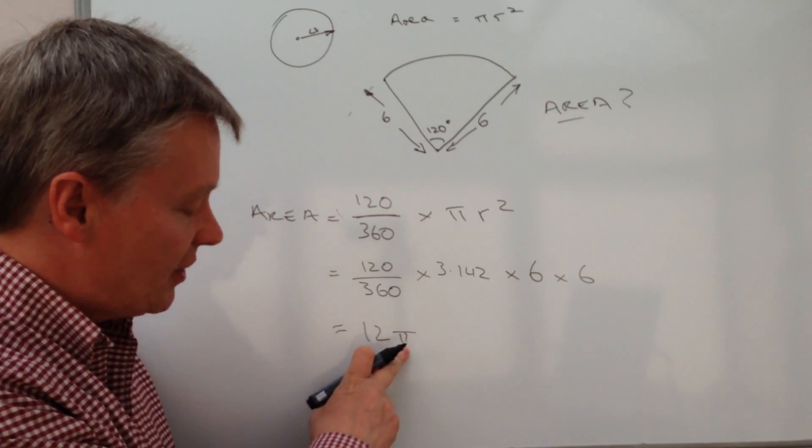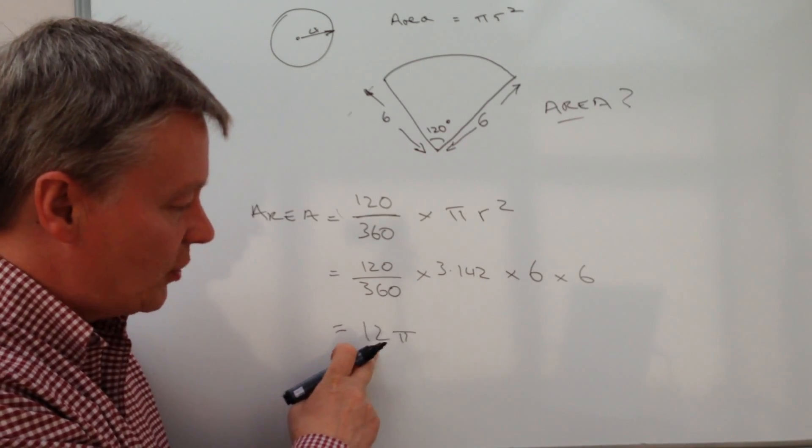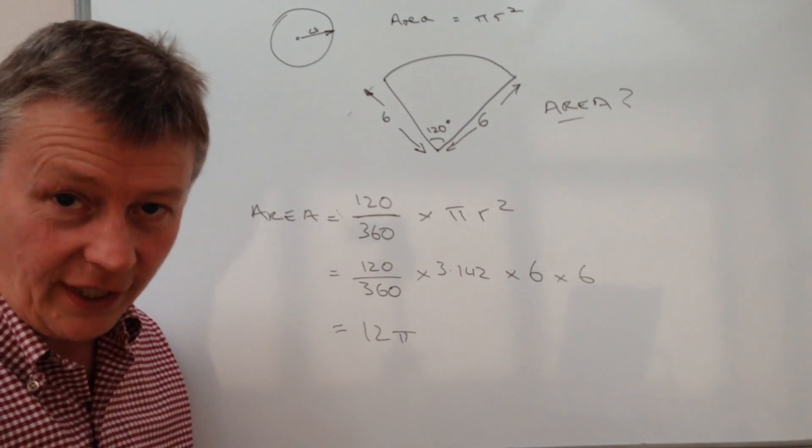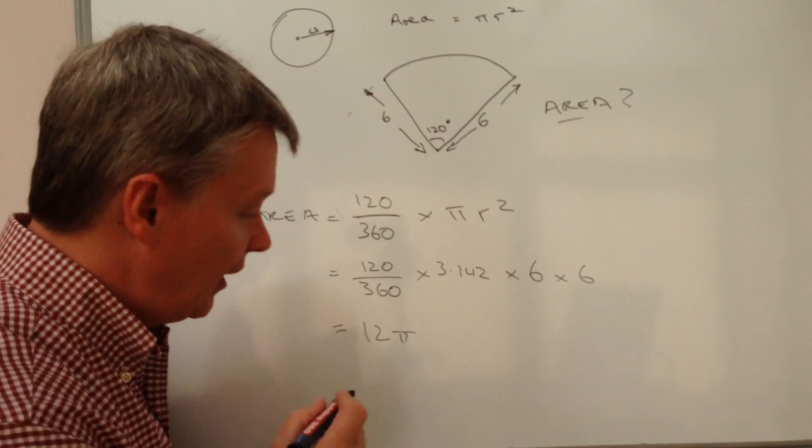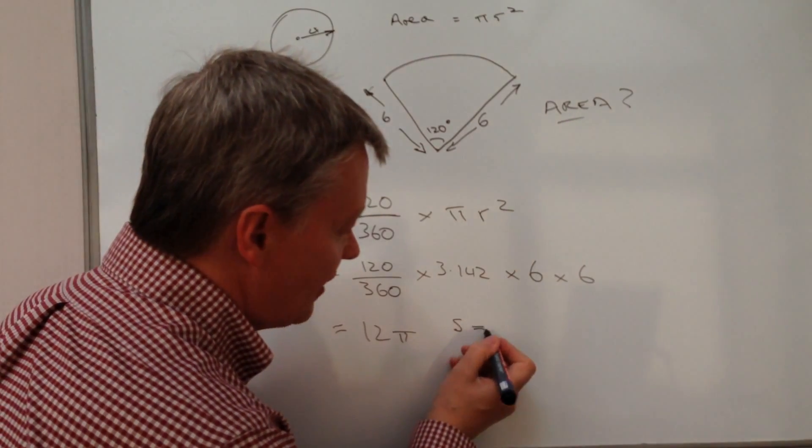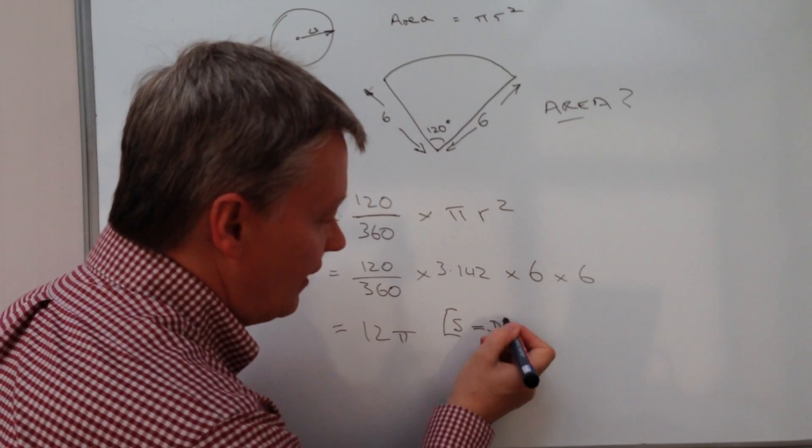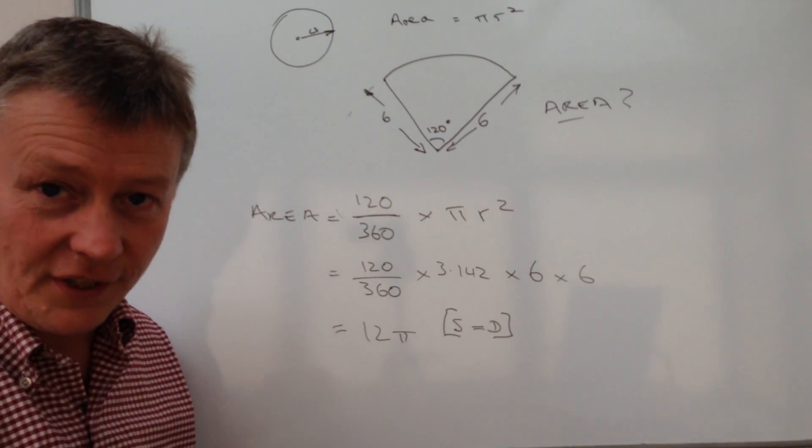Because pi is a fixed number, it's 12 multiplied by pi on a calculator. If you press, there's a little button on your calculator that says, usually it says SD.